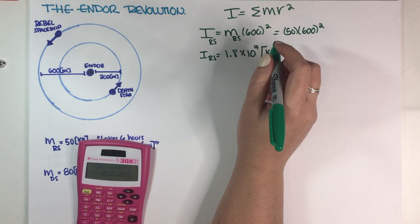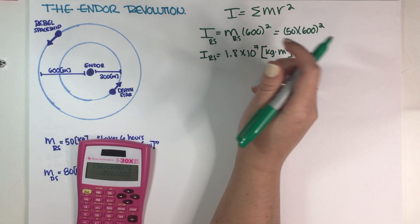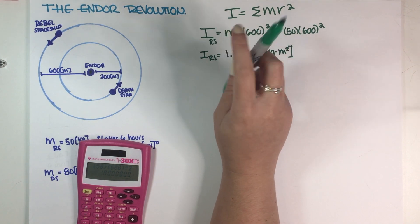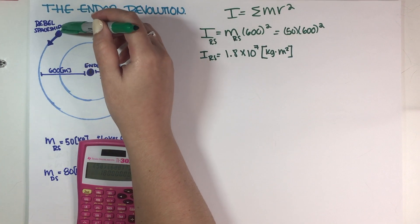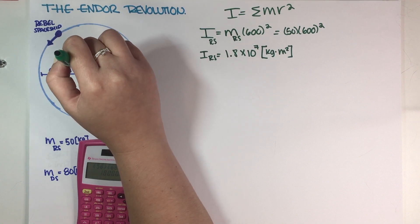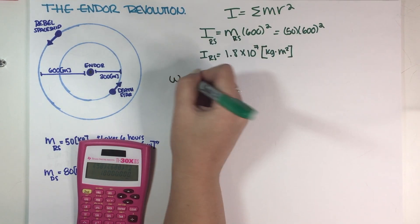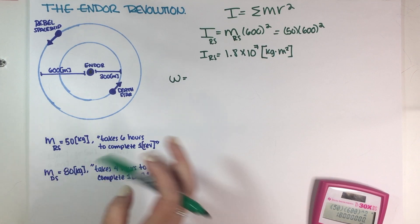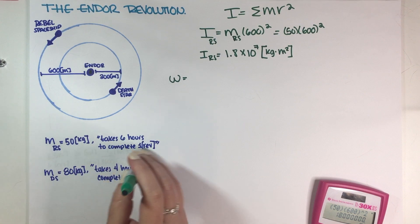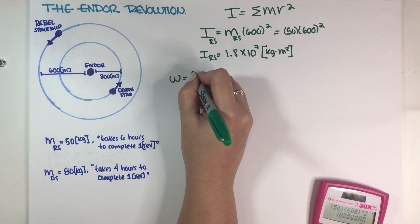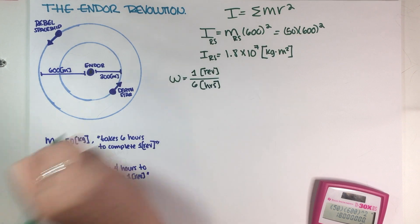The second question of this first part is, what is the Rebel spaceship angular velocity? Remember that angular velocity refers to how fast something is spinning. In this case, it refers to how fast is the Rebel spaceship moving in relationship to Endor, or around Endor. This problem gave us some form of angular velocity because it said that it takes the Rebel spaceship six hours to complete one revolution. So you can complete one revolution in six hours.